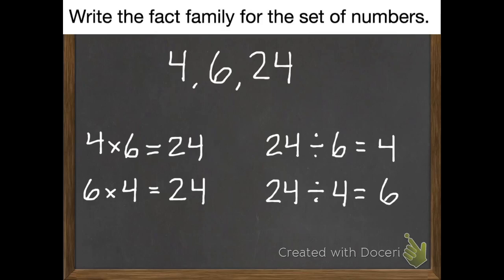Notice these division facts are the opposite of our multiplication facts. So on the top it goes 4, then 6, then 24. And on the division side, it goes 24, then 6, then 4. They're just completely backwards. We call these inverse operations.